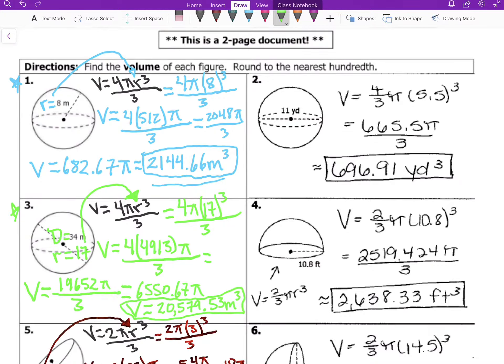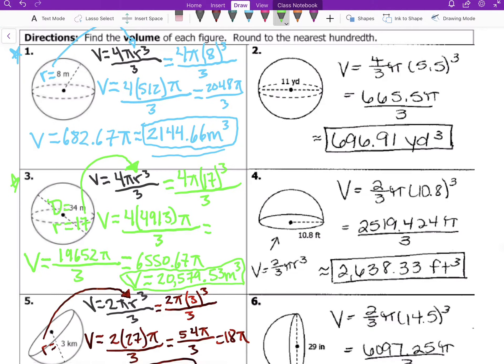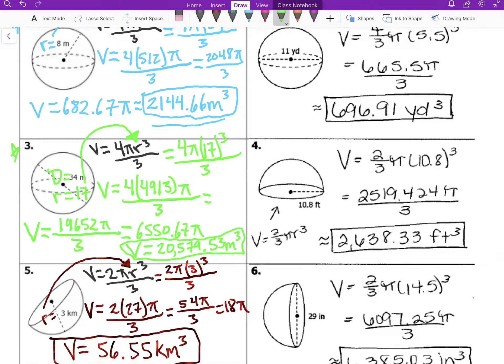17 times 17 times 17 - we cube it - we get 4913, multiplied by π, times 4, and then we get 19652 times π divided by 3. But we divide by 3 first, so after we divide by 3 we're going to get 6550.67 times π, and then here our volume will be 20,579.53 meters cubed for that sphere.